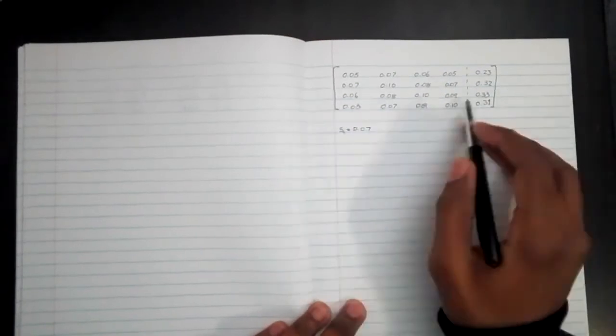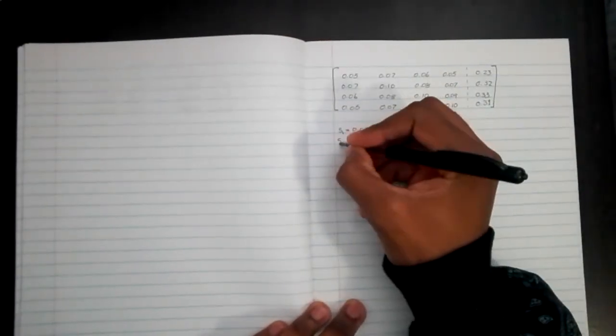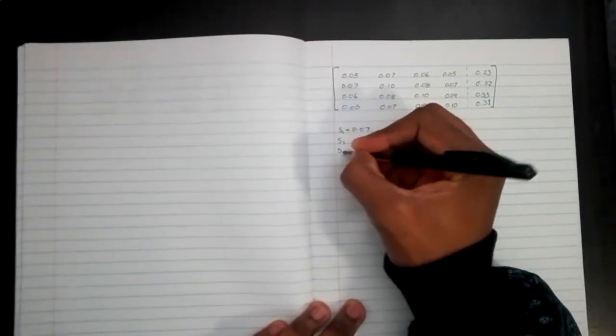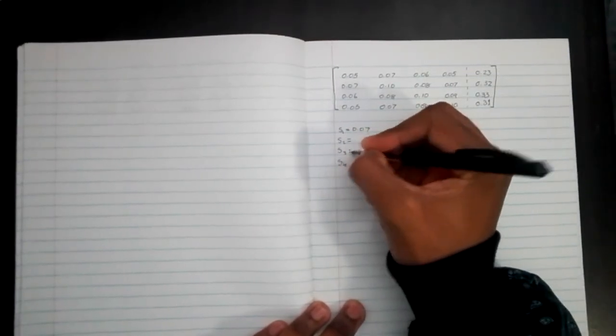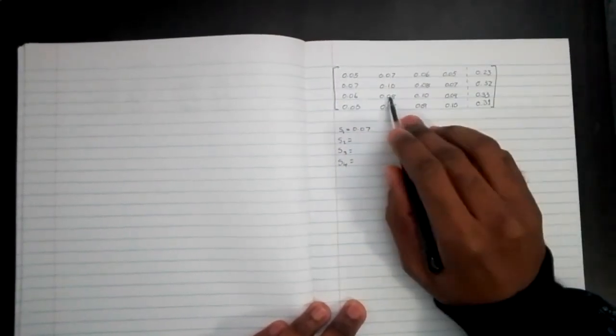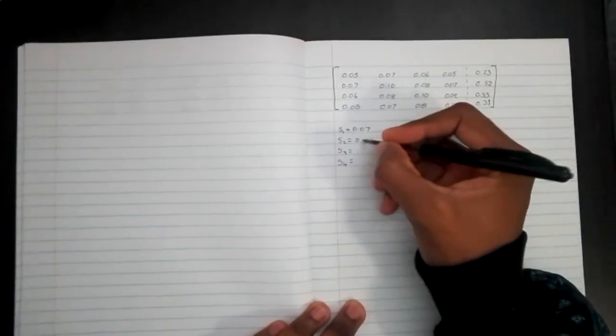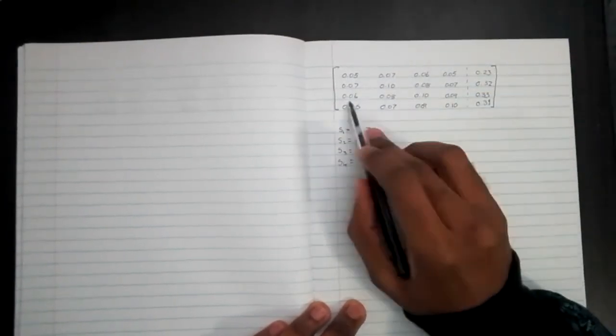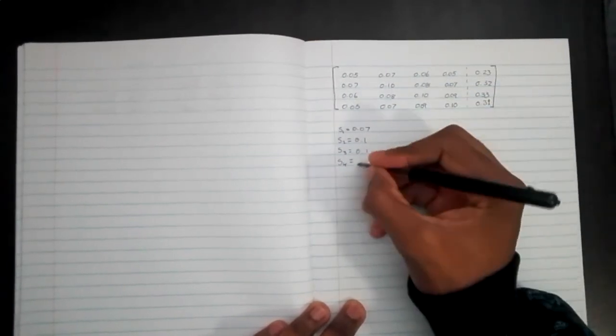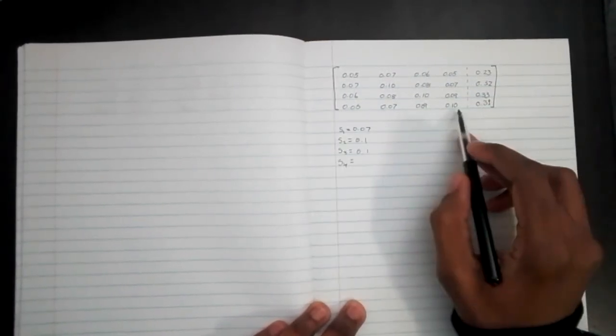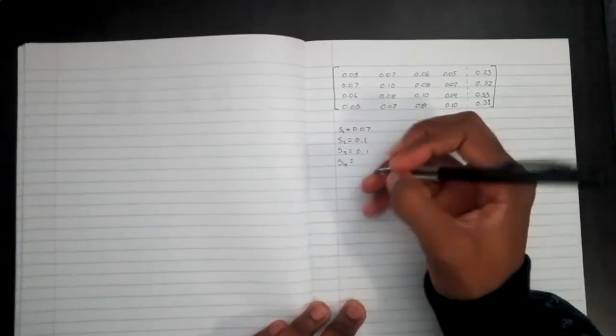Let's do that for the second row, third row, and fourth row. We'll have S2, S3, and S4. Here we have 0.1 as our largest number. Here we have 0.1 again, and for the fourth row, we have 0.1 again.